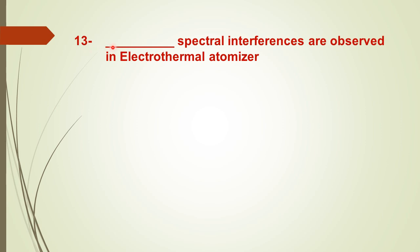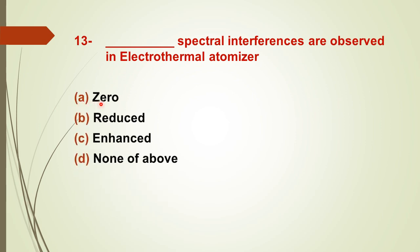Question number thirteen: spectral interferences are dash in electrothermal atomizers — options: A) zero, B) reduced, C) enhanced, D) none of the above. The right answer is B — reduced. In the case of electrothermal atomizers, spectral interferences are much reduced.